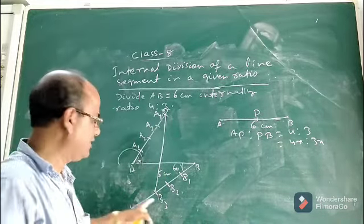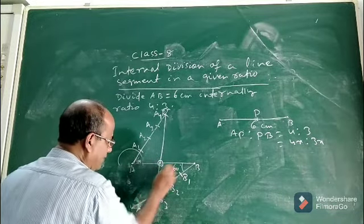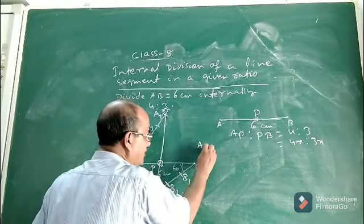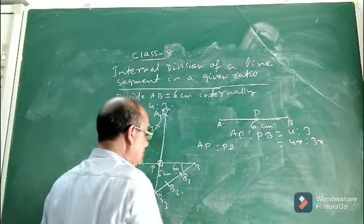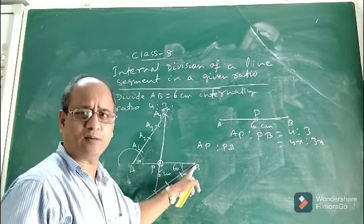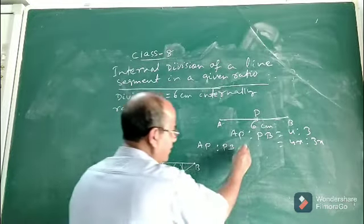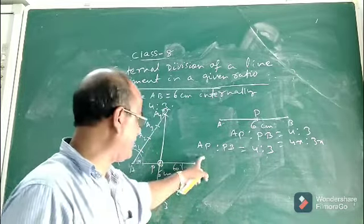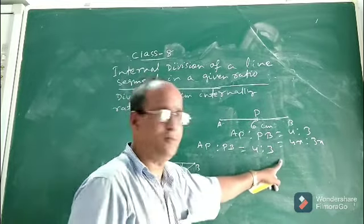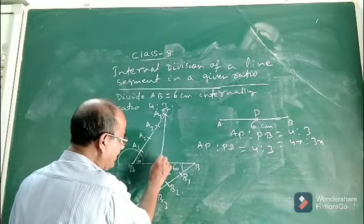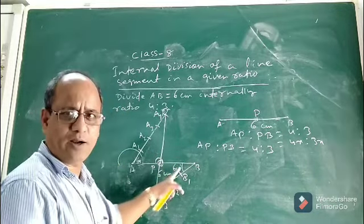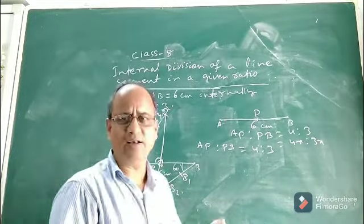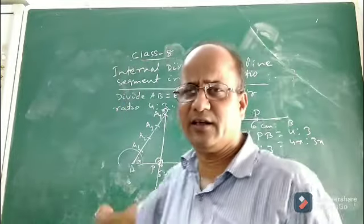You join the fourth part and the third part. The point where this line intersects AB will be P. You will be surprised to find that after getting point P, if you measure AP and PB, their ratio will automatically be 4 is to 3. The point P divides AB internally in the ratio 4 is to 3. This is the technique to divide any line segment internally in a given ratio.